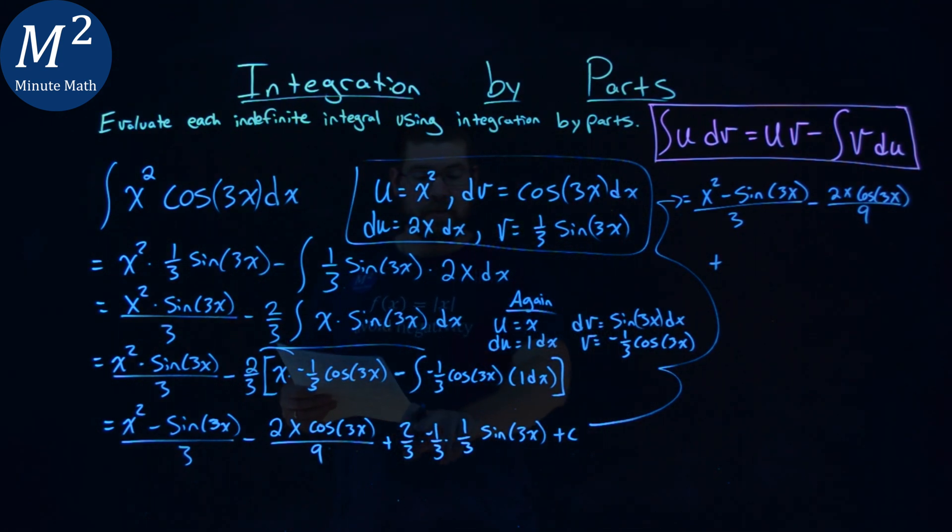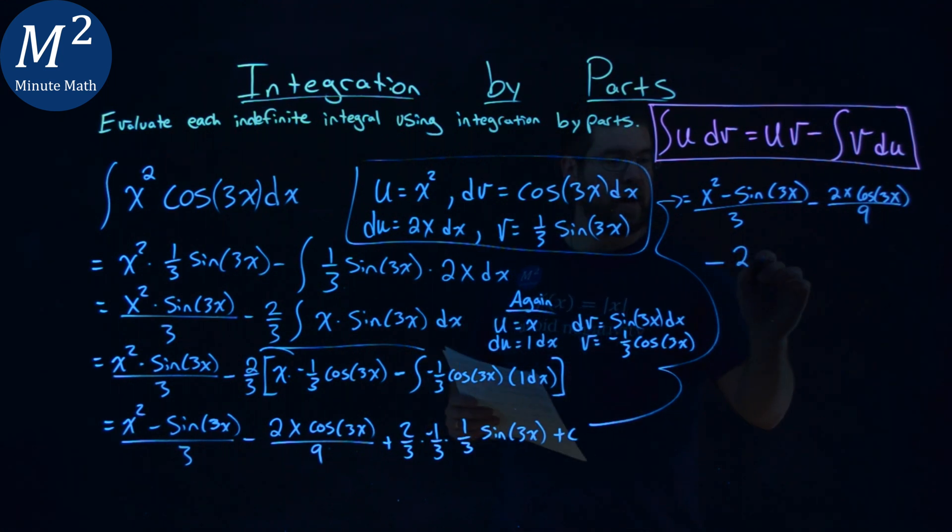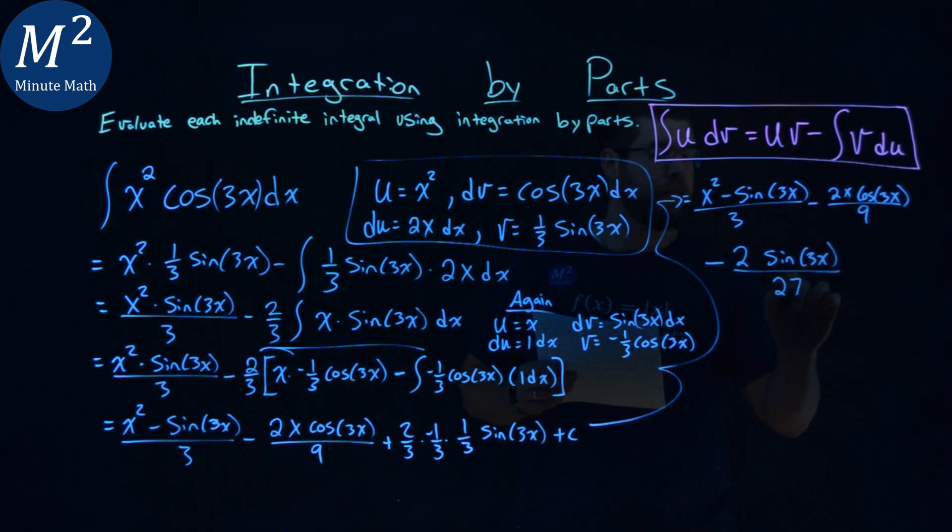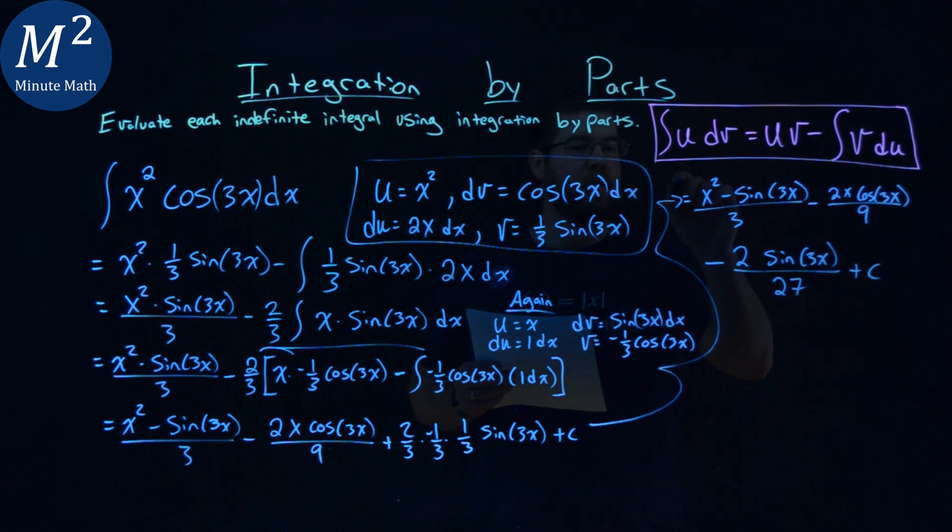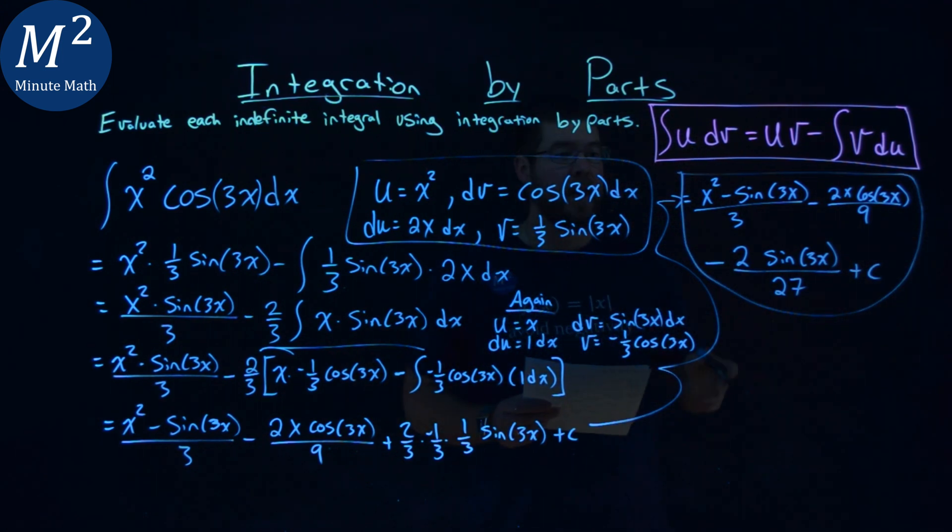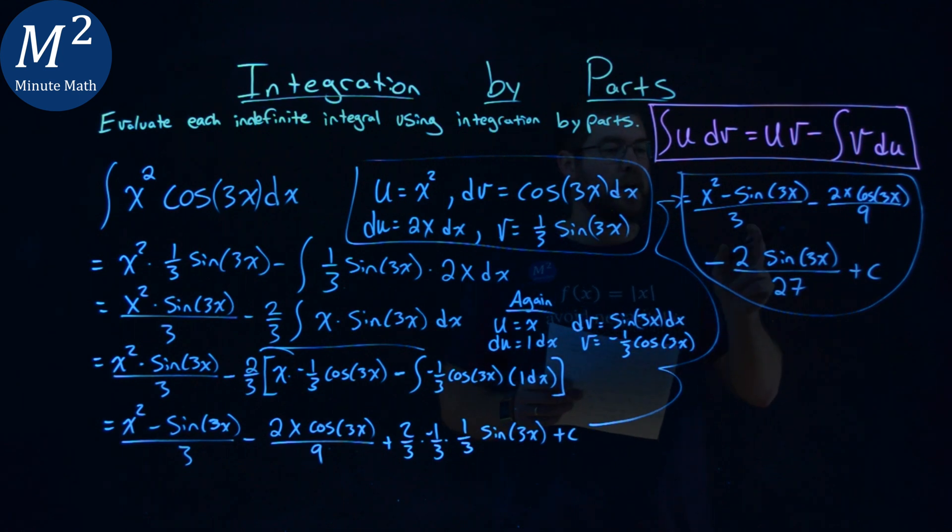We multiply this out, we have 2 times negative 1 times 1 is negative 2. Minus 2 sine of 3x over our denominator, 3 times 3 times 3, which is 27, plus c. So all of this is my final answer: x squared sine of 3x over 3 minus 2x cosine of 3x over 9 minus 2 sine of 3x over 27 plus c.